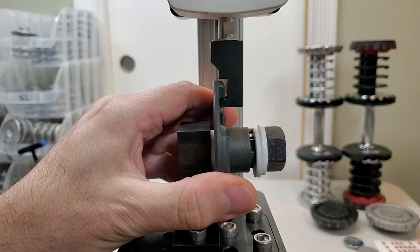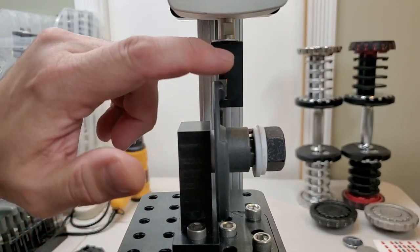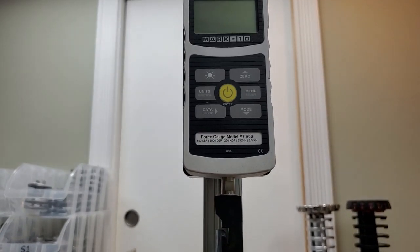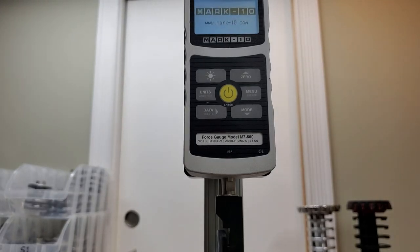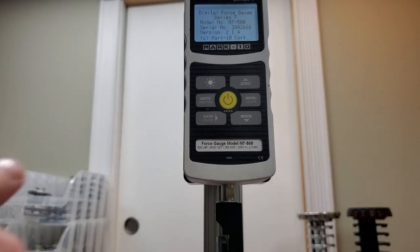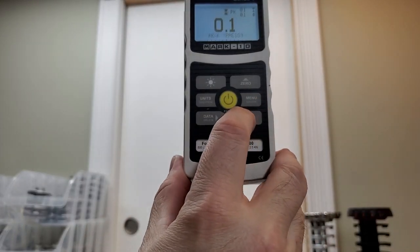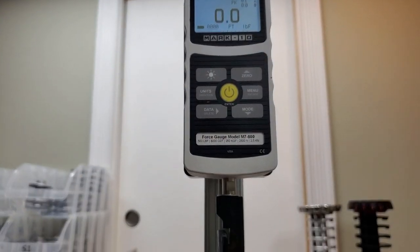So this is a Series 1 disc. It is now positioned with the center lip on this part. We go up here, turn on our Mark 10, make sure it is on peak tension, PT, zeroed, come back down here.